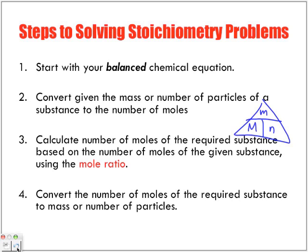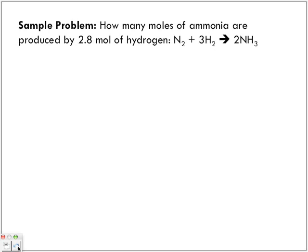Again, using the Avogadro constant if it asks you for the number of particles. Let's look at this question here: How many moles of ammonia are produced by 2.8 moles of hydrogen? So we've got 2.8 moles of hydrogen and it's asking us how many moles of ammonia.